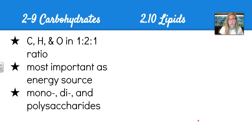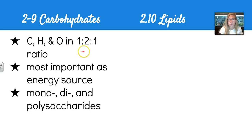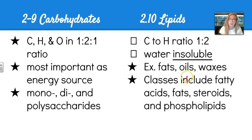Sections 2.9 through 2.12 cover our biggest organic compounds, starting with carbohydrates. They have a carbon-hydrogen-oxygen ratio of 1:2:1, are most important as an energy source, and include mono-, di-, and polysaccharide types. Lipids have a carbon-hydrogen ratio of 1:2 and are water-insoluble, so they do not break down in water. Good examples are fats, oils, and waxes.